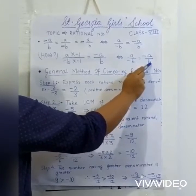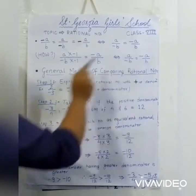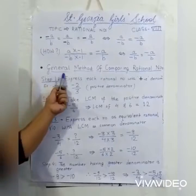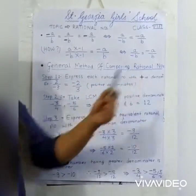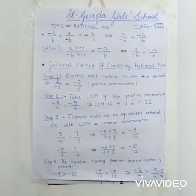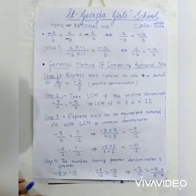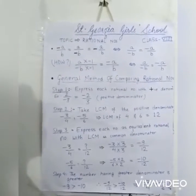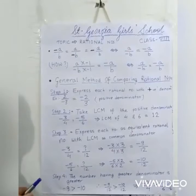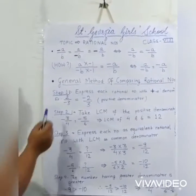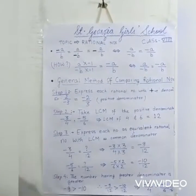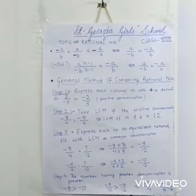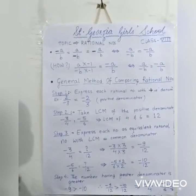Now coming to the general method of comparing rational numbers — how to determine which rational number is greater or smaller, or how to write them in ascending or descending order. Step 1 is to express each rational number with a positive denominator, that is, in standard form.